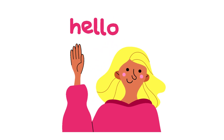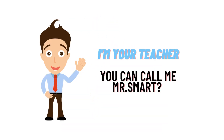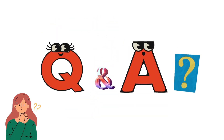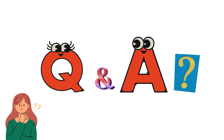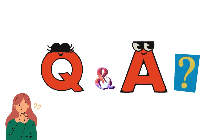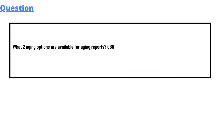Hello everyone, my name is Mr. Smart and I'm your teacher. I'll be teaching you different questions and answers in this Q&A series. Today's question which we'll be discussing is: what two aging options are available for aging reports in QuickBooks Online?